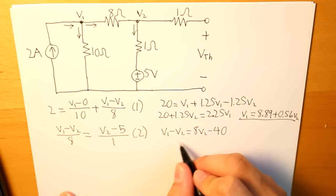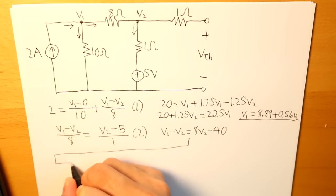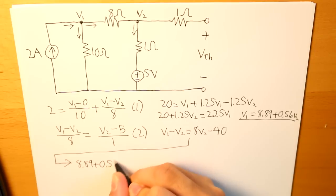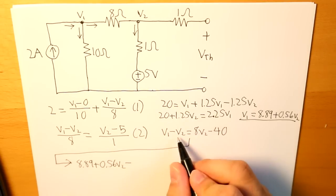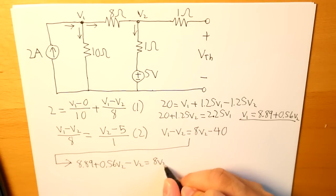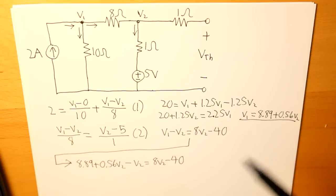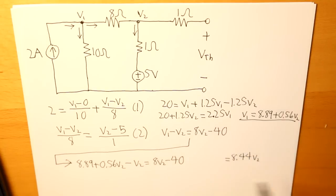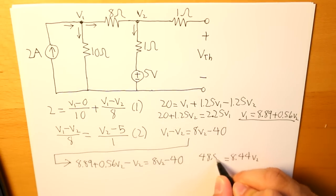So V1 is going to be 8.89 plus 0.56 V2. Then we have minus V2 equals to 8 V2 minus 40. Now let's put V2 onto the right side and then all of our constants onto our left side. So what we get is 8.44 V2 on the right side and on our left side what we get is 48.89.